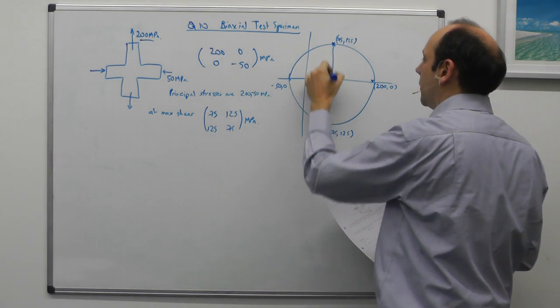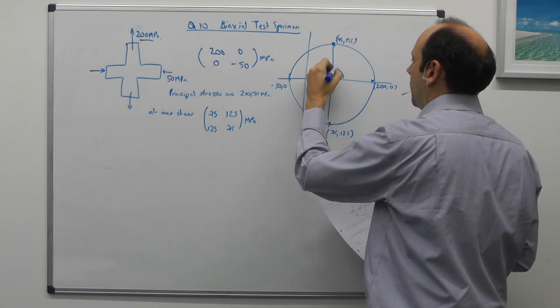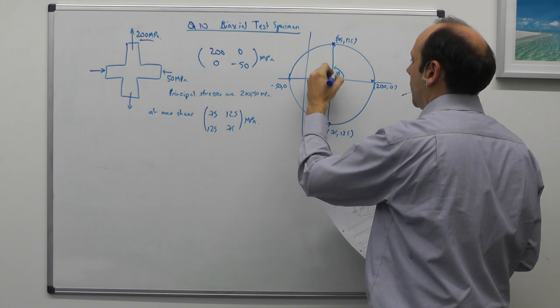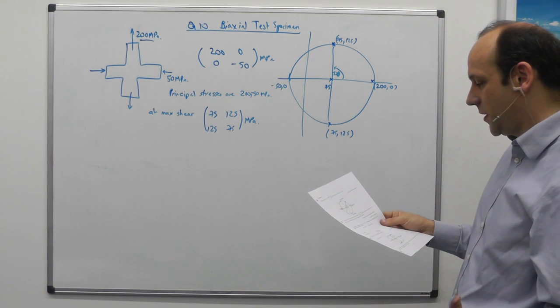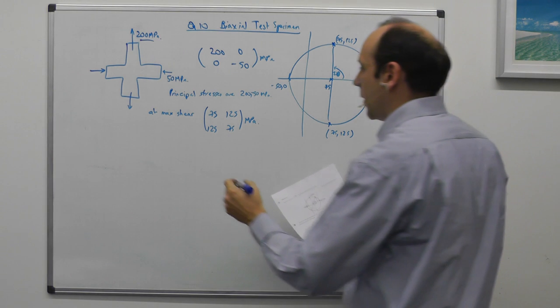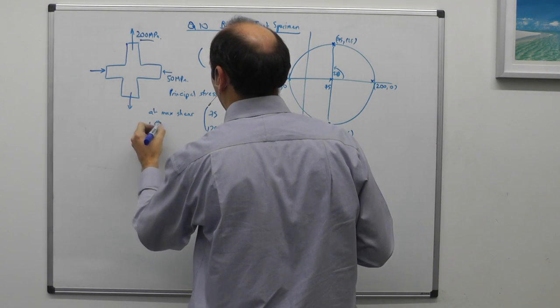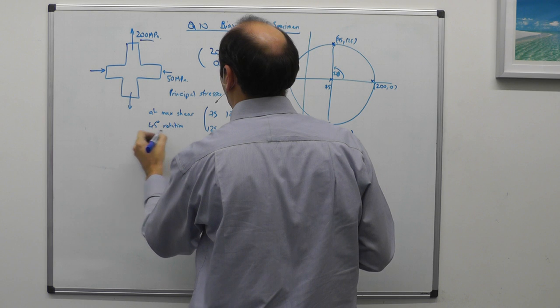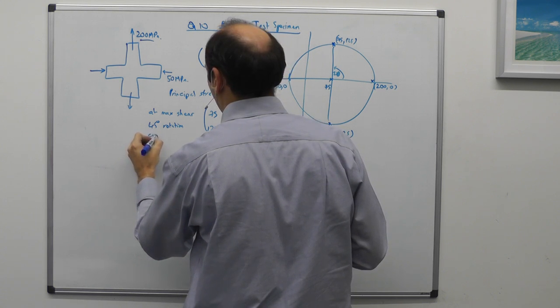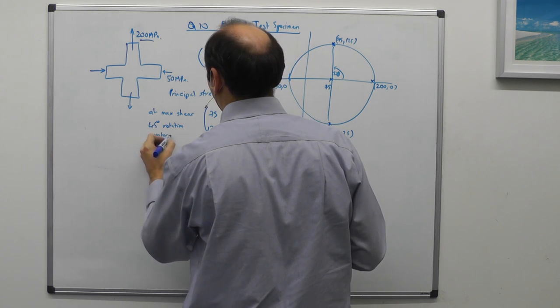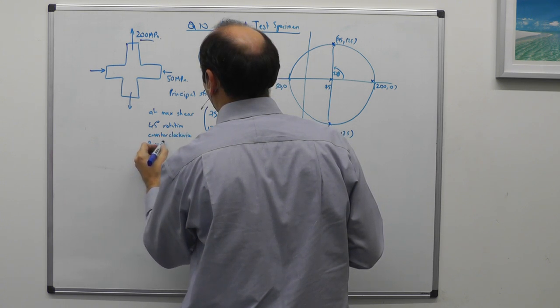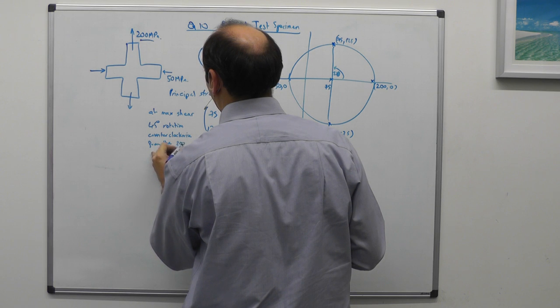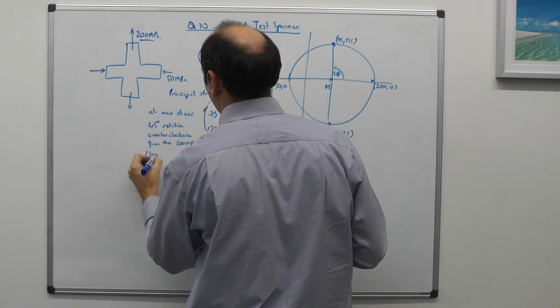And the angle 2 theta here between the principal stress matrix, the one we originally applied, and the max shear condition is 45 degrees. So 45 degree rotation counterclockwise from the 200 MPa. That is the longitudinal axis.